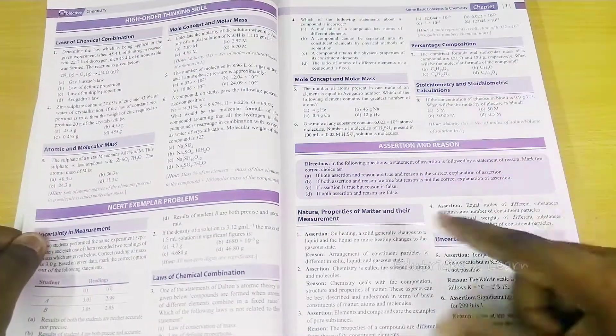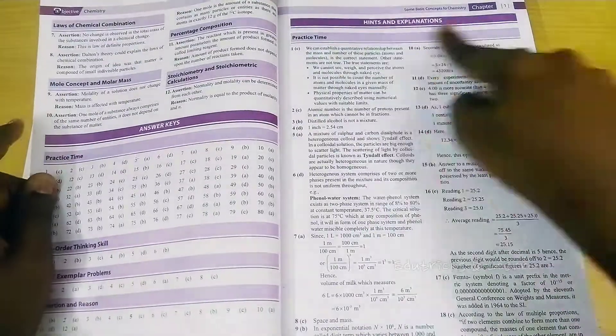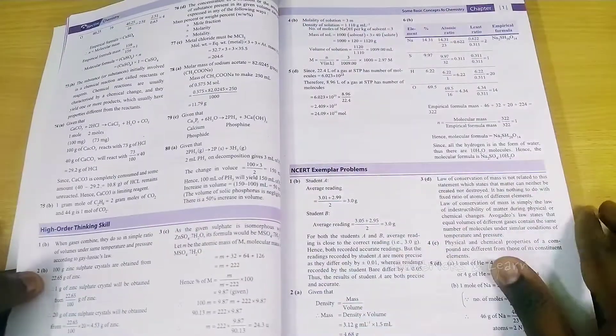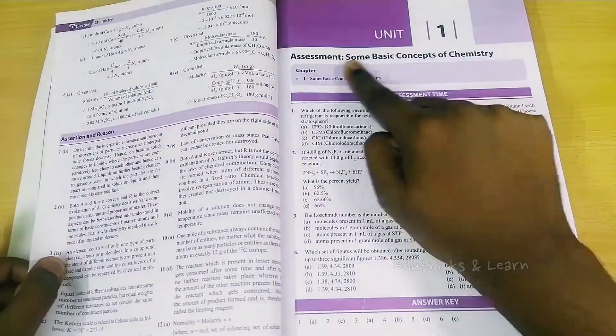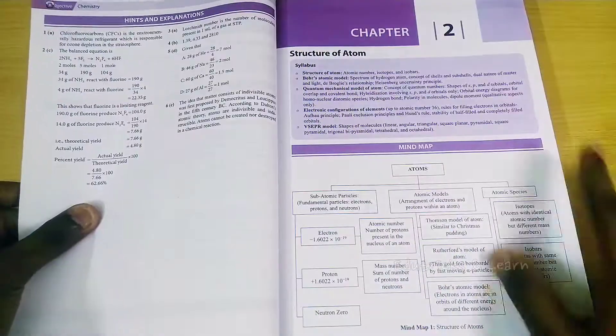They've given higher order thinking skills, NCERT exemplars, assertion and reason, everything. And they've given answer key and explanation of each question with brief explanations. For unit 1, they've given a unit test with answer keys and explanations.